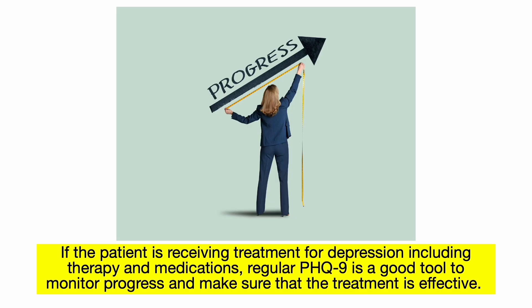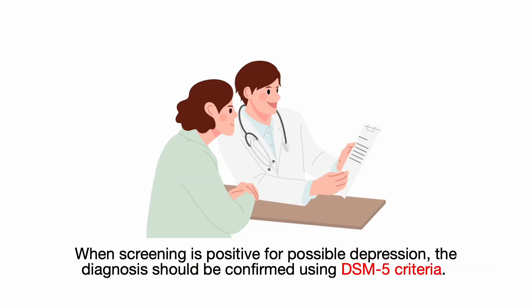If the patient is receiving treatment for depression, including therapy and medications, regular PHQ-9 administration is a good tool to monitor progress and ensure that treatment is effective. When screening is positive for possible depression, the diagnosis should be confirmed using the DSM-5 criteria.